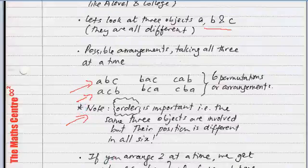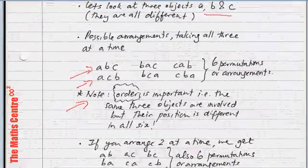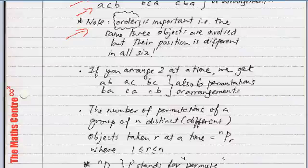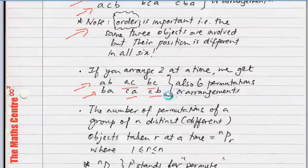Now, what happens if you take two at a time and arrange? So, if you take two at a time, you will get AB, BA, AC, CA, BC, and CB. You also get six permutations or arrangements if you take two objects from three and arrange them in a line.